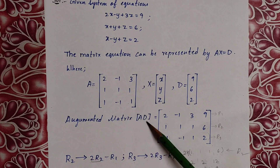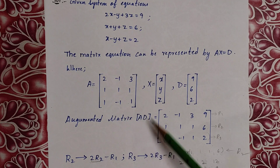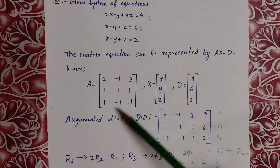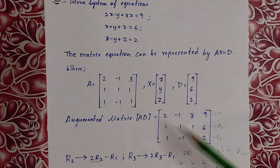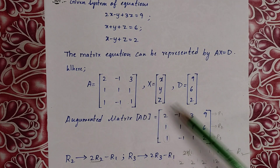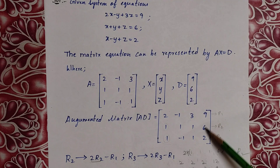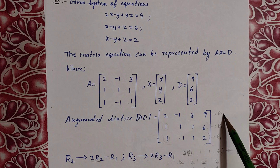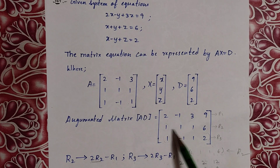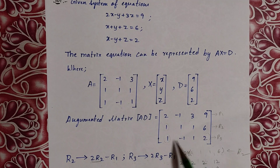The augmented matrix [A|D] is formed by writing the matrix A alongside the constants matrix D containing [9, 6, 2]. We label the rows as R1, R2, R3.